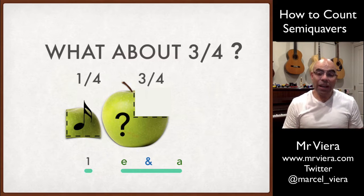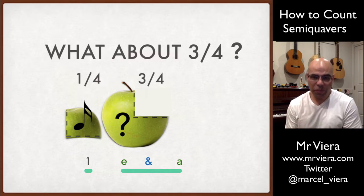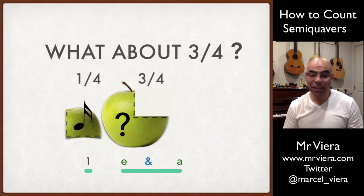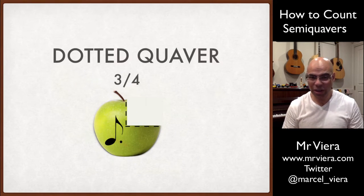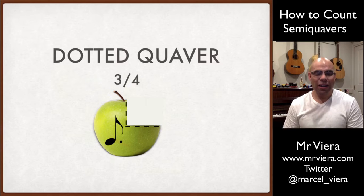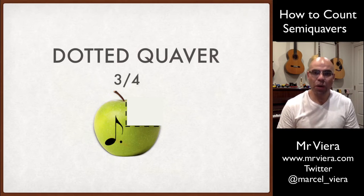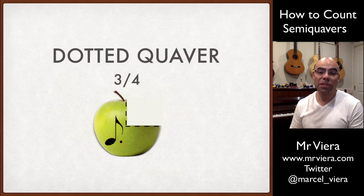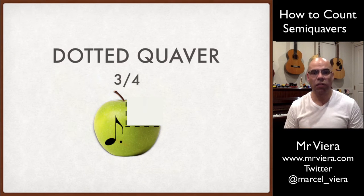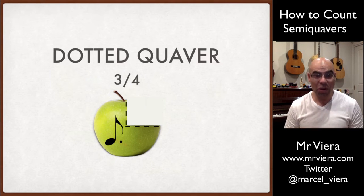So we still haven't worked out yet how to get these three quarters of a beat. And the answer to this is what's called a dotted quaver. A dotted quaver is our musical representation to show something represents three quarters of a beat or three quarters of an apple.